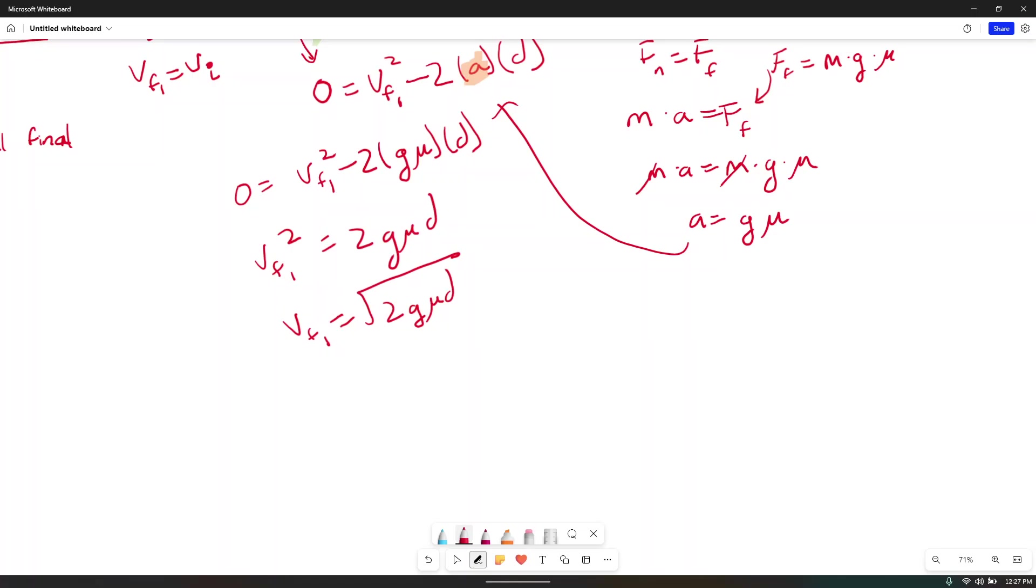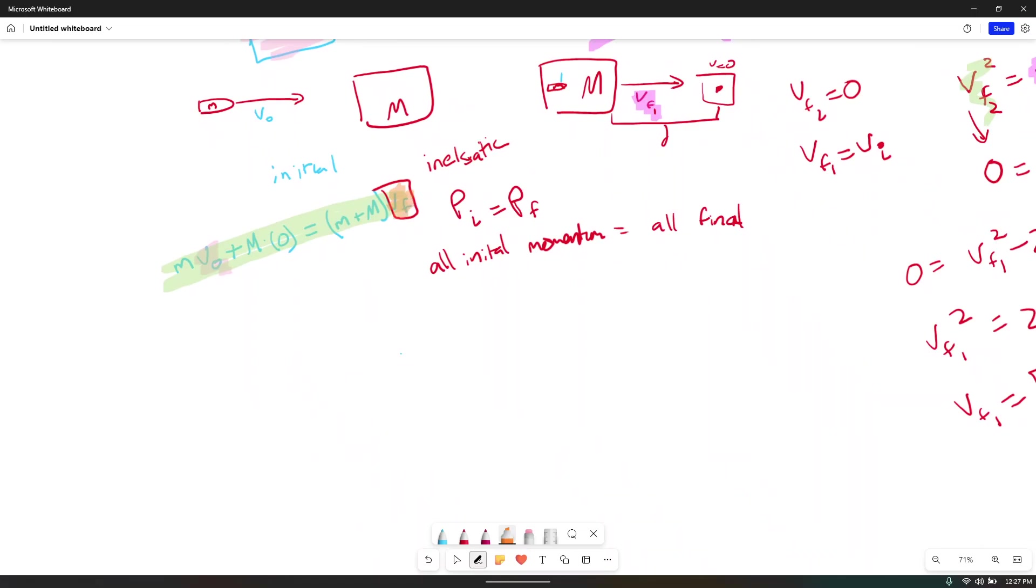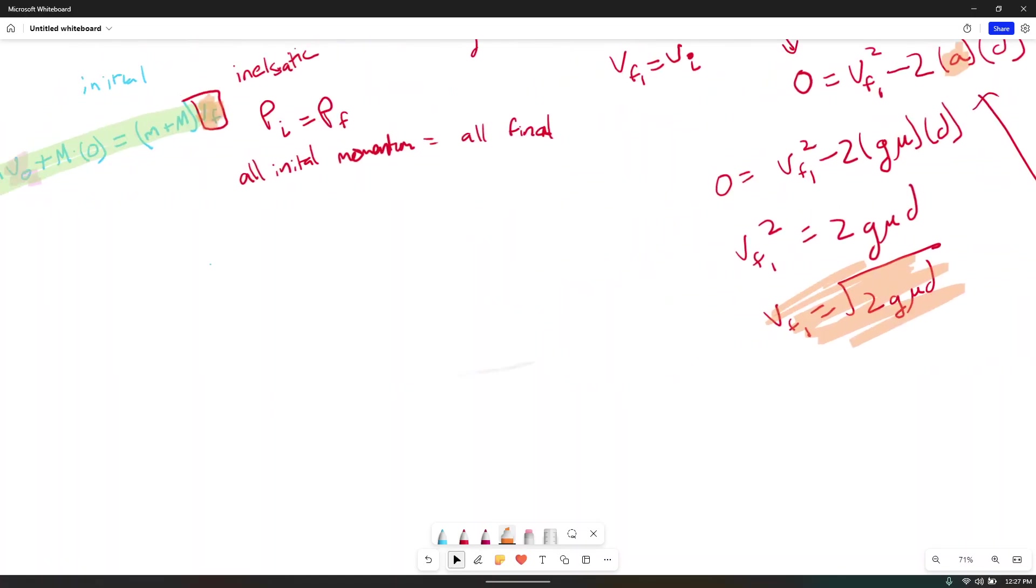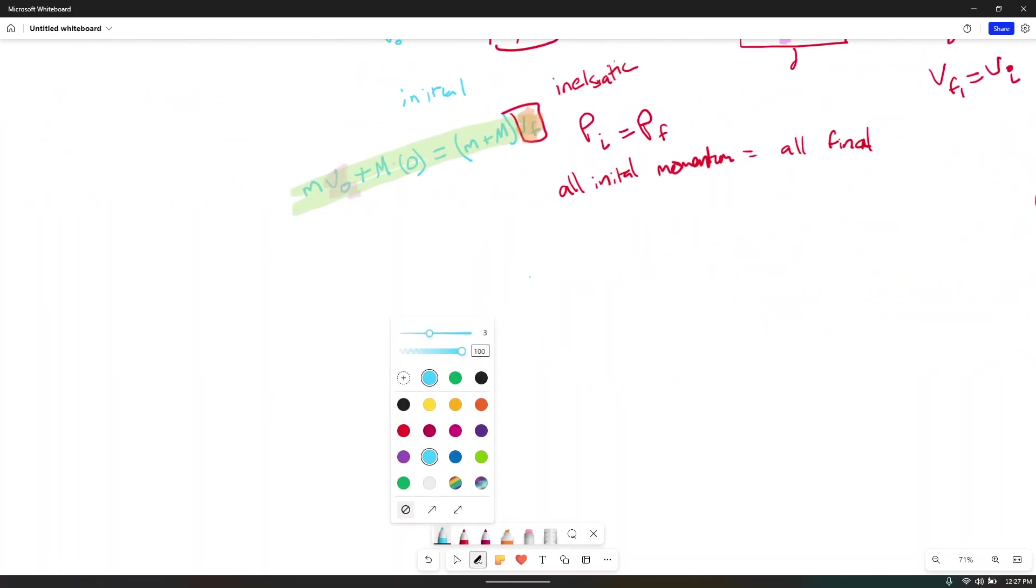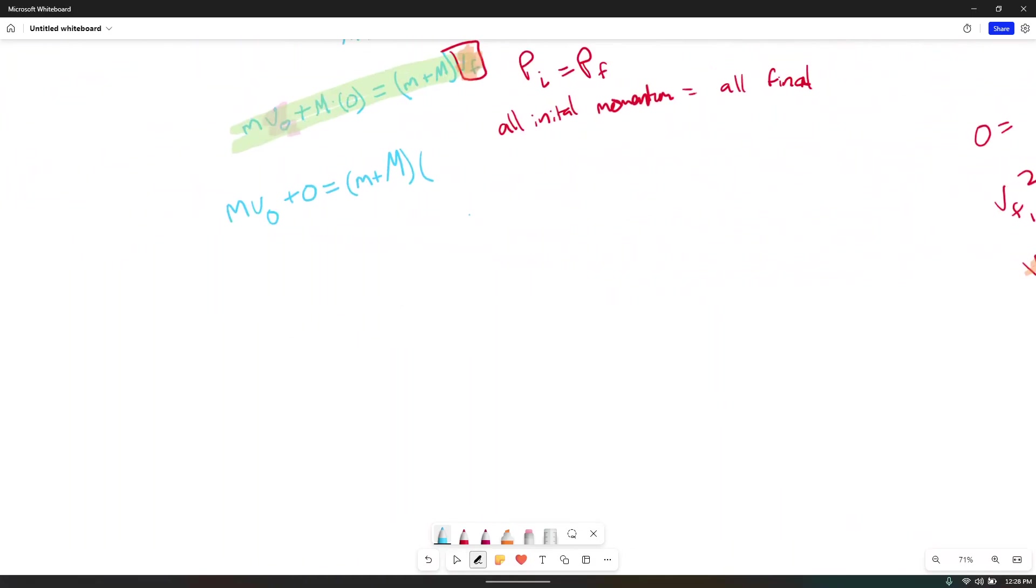No, folks. This is why I have you write down this. We're trying to find velocity initial. All we did right now is find that velocity final, that velocity final being this velocity final one right here. Now what we can do is finally go back to our original equation and continue on. m v naught plus zero is equal to little m plus big M times, what do we get for our velocity final? Square root of two g mu d. Now we can simplify a little bit. V naught, all we're doing is dividing both sides by m, v naught is equal to little m plus big M times the square root of two g mu d all over little m. This is your final answer here. This is what you would put in right here.